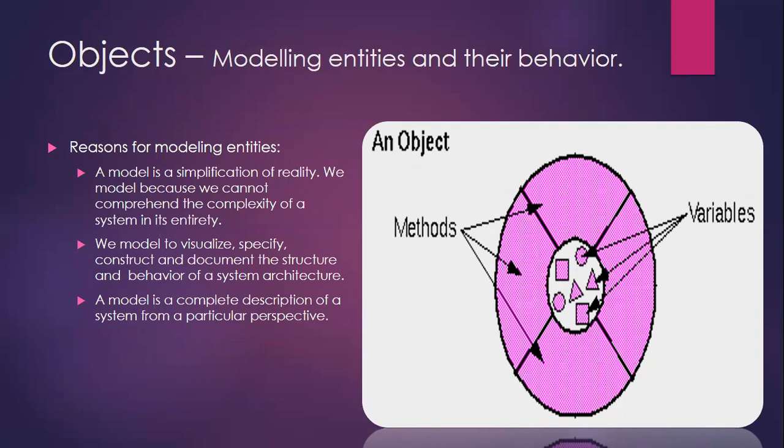Objects — how do you model an entity? Entity means any important feature. Entities can be methods or variables for an object. A model is a simplification of reality. We model because we cannot comprehend the complexity of a system in its entirety. We model to visualize, specify, construct, and document the structure and behavior of a system's architecture.